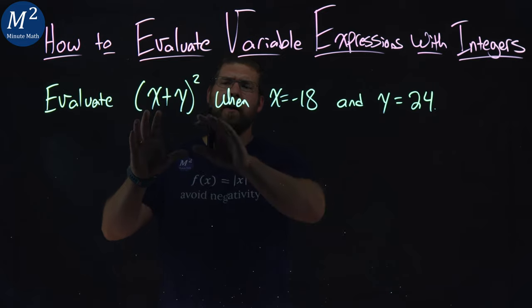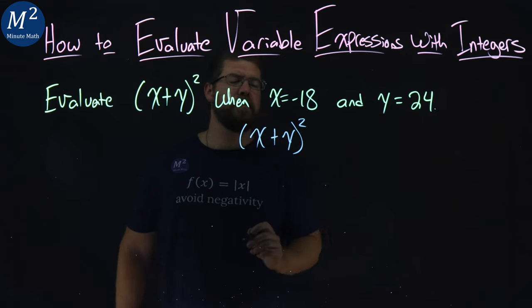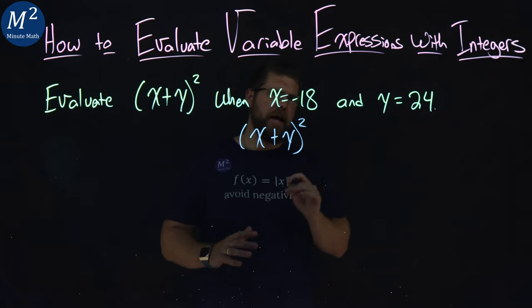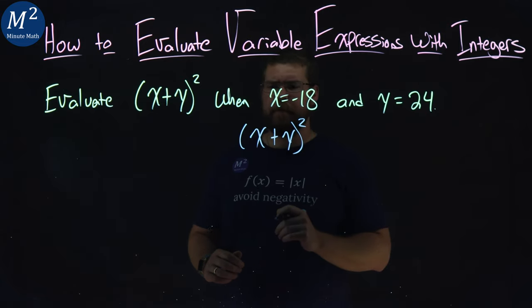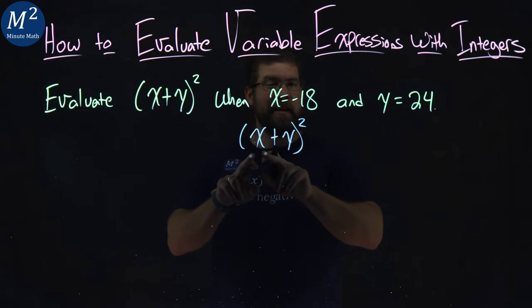Well first, I want to rewrite this expression: x plus y all squared. Now, they tell us when x equals negative 18. So I'm going to substitute negative 18 in for my x.